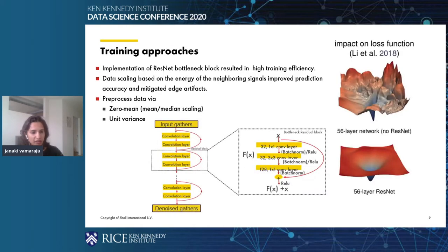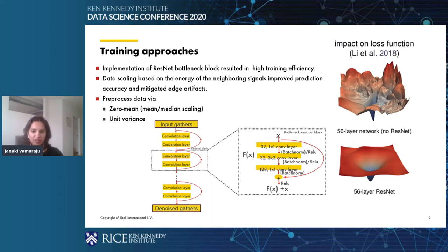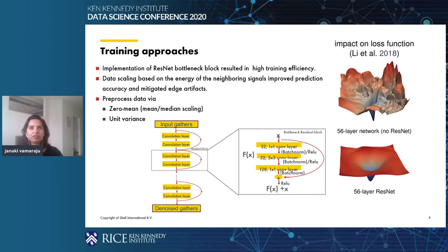We implement the ResNet bottleneck block, which resulted in high training efficiency. When neural networks become sufficiently deep, neural loss landscapes quickly transit from being convex to highly chaotic. This transition coincides with a dramatic drop in generalization error and ultimately leads to lack of trainability. Li et al. in 2018 showed the impact of ResNet on the loss function. They observed that skip connections promote flat minimizers and prevent this transition to chaotic behavior, explaining why skip connections are necessary for training extremely deep neural networks. So we use them here.